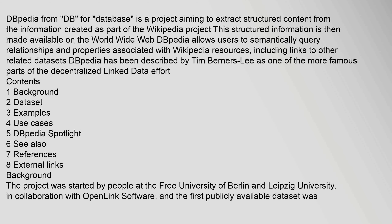DBpedia, from 'DB' for 'database', is a project aiming to extract structured content from the information created as part of the Wikipedia project. This structured information is then made available on the World Wide Web. DBpedia allows users to semantically query relationships and properties associated with Wikipedia resources, including links to other related datasets. DBpedia has been described by Tim Berners-Lee as one of the more famous parts of the decentralized linked data effort.